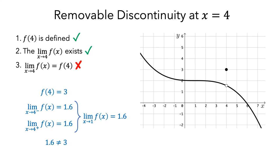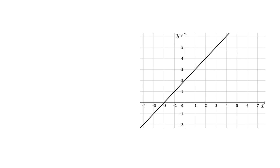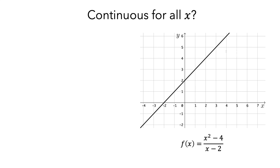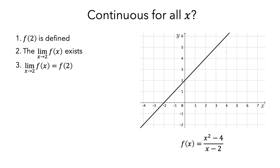What about the very first example we looked at? When we used the informal notion of continuity, this function appeared to be continuous. It turns out this is a graph of the function f(x) = (x²- 4)/(x - 2). Let's look at x equals 2 and think about the three conditions. If you try to evaluate this at x equals 2, you'd end up dividing by 0, so f(x) is undefined at x equals 2. Since a single point is infinitesimally small, you wouldn't be able to see this on the graph itself. The convention is to place an open circle on the graph at x equals 2. So f(2) isn't defined, we haven't satisfied the first condition, and f(x) is not continuous at x equals 2.